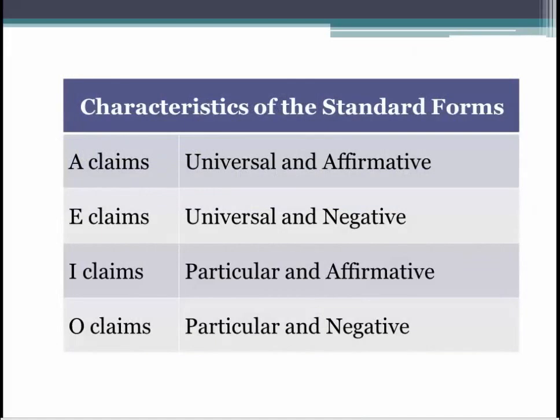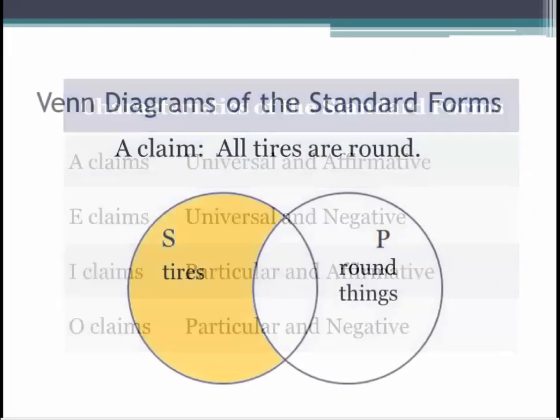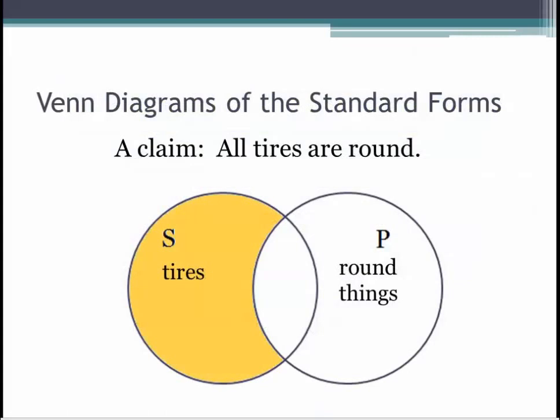Here is another way to remember the characteristics of the standard forms. Venn diagrams are a way of using circles to visualize the relationship between categories in a proposition. In this example, tires is the subject of the proposition and round things is the predicate. The proposition says that the only tires there are are round things.